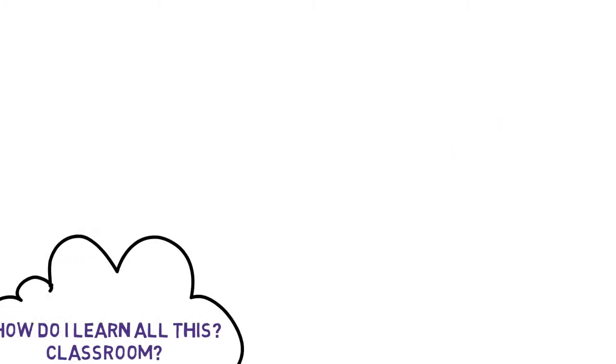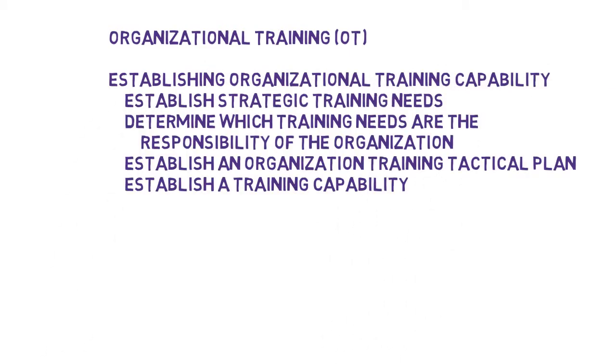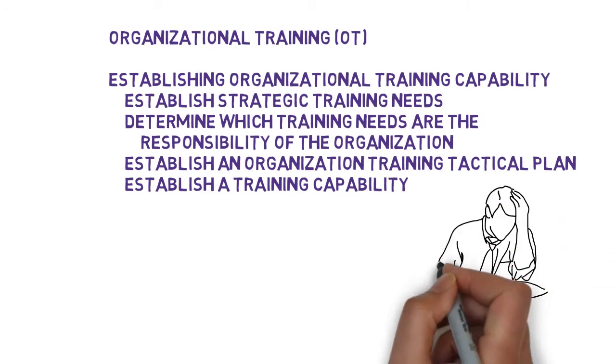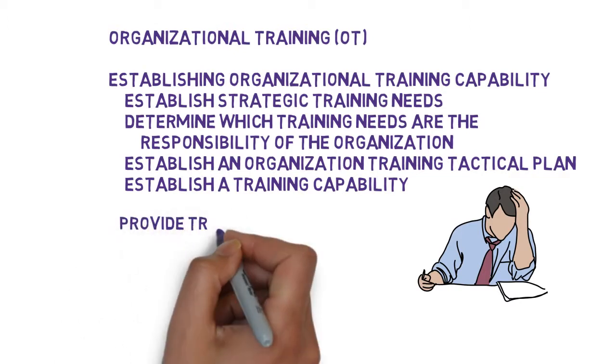The CMMI specifies that some sort of training capability needs to be in place for skills and knowledge that the organization determines is appropriate for general use. That function, whether formal or informal, should identify strategic needs, identify which of those are the organization's responsibility and which might be specific only to a few projects, put a plan in place, and provide the capability to deliver the skills and knowledge.